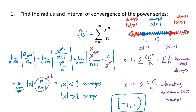So the interval of convergence is from minus 1 to 1, including minus 1 but not including plus 1. The radius of convergence is the distance from the center out to those endpoints, which in this case is 1. So our interval is [-1, 1) and our radius is 1.